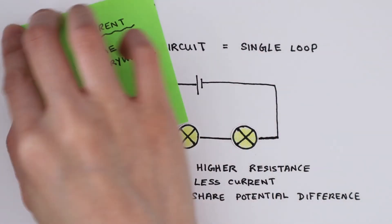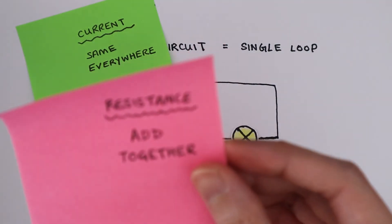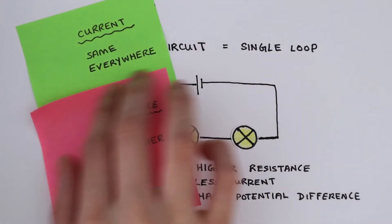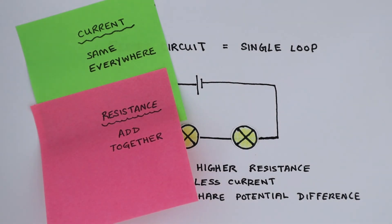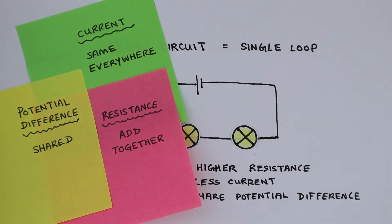Here's a summary. In a series circuit, current is the same at all points. Individual resistances add up to give the total resistance. And the potential difference of a cell is shared between all components within the circuit.